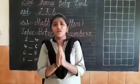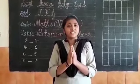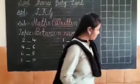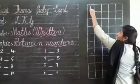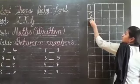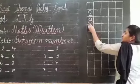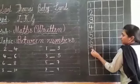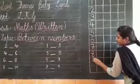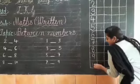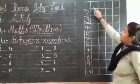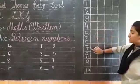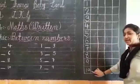Do you know what is the concept of between numbers? This is discussed in our maths class, but first of all let us recall 1 to 10 numbers. 1, 2, 3, 4, 5, 6, 7, 8, 9, 10. Now a little bit faster: 1, 2, 3, 4, 5, 6, 7, 8, 9, and 10.